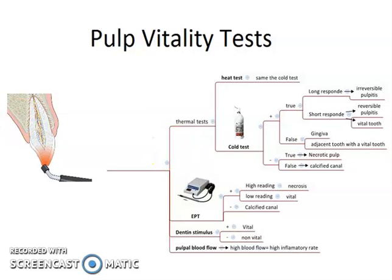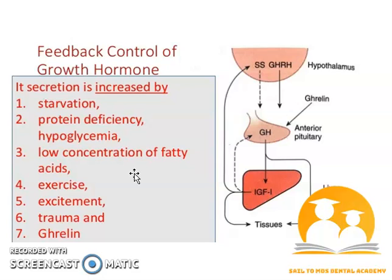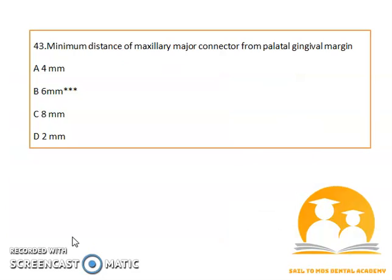Regarding growth hormone secretion: its secretion is enhanced by fasting. The feedback control shows that secretion is increased by starvation, protein deficiency, hypoglycemia, low concentration of fatty acids, exercise, excitement, trauma, and ghrelin. Remember, ghrelin is a hormone secreted by the stomach.